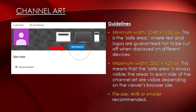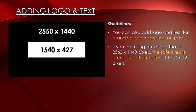Here's a recommended guideline: the minimum width should be 2048 by 1152 pixels. This is the safe area where text and logos are guaranteed not to be cut off when displayed on different devices. Maximum width should be 2560 by 423 pixels — meaning the safe area is always visible. The areas to each side of the channel art are visible depending on the viewer's browser size. The file size should be four megabytes or smaller. You can also add a logo and text for branding and marketing purposes. If you're using an image that's 2560 by 1440 pixels, the safe area is precisely in the center at 1540 by 427 pixels. You can use this area to input things like your logo, company name, and even the promotion of the month. Having the logo and text within the safe area ensures that the message does not get cut off and will appear as intended even across different platforms.